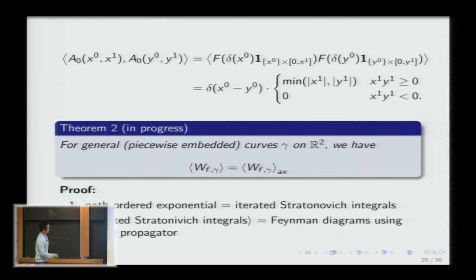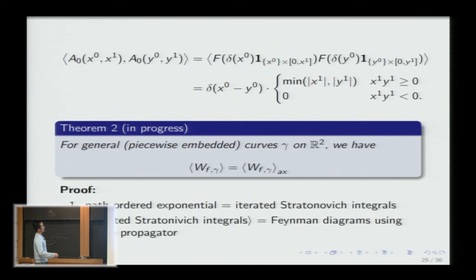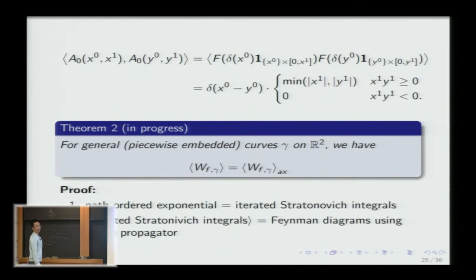Why is it not yet written down? There's a lot of probability theory involved, and one of the main references is in French — I need to sit down and make sure I'm translating it correctly. The key step is: write the Wilson loop as a path-ordered exponential, reinterpret it stochastically as iterated Stratonovich integrals, and check that the expectation of those integrals agrees with the Feynman diagram expansion using the two-point function. You want to do this abstractly because the curves can be arbitrarily winding.